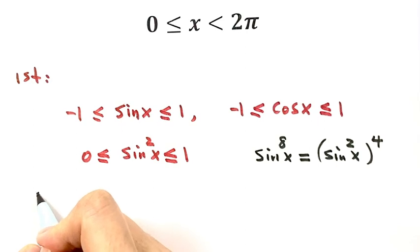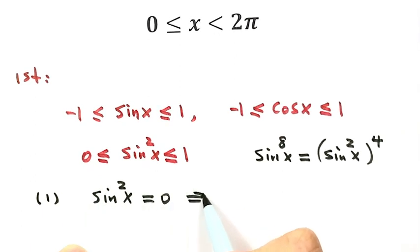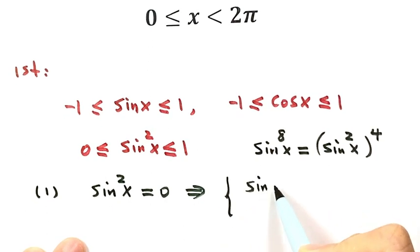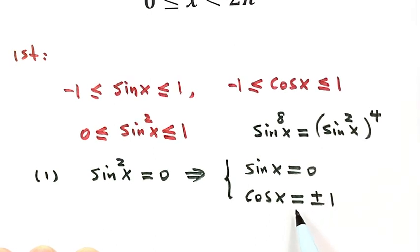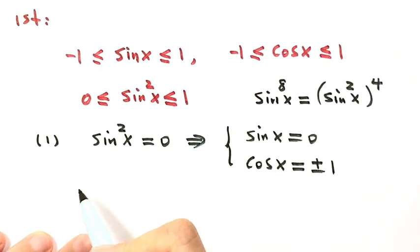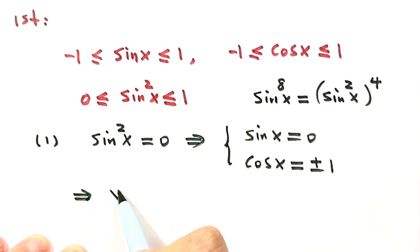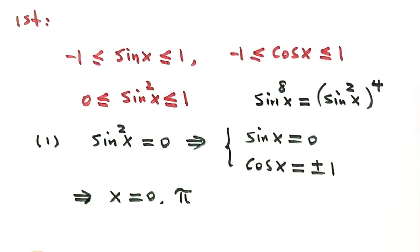The first case: sine x equals 0. Then cosine x equals positive or negative 1. Taking these two cases into the equation makes it true. Solving these gives x equals 0 and x equals pi, since x is between 0 (inclusive) and 2 pi (exclusive). Those are the first two solutions.